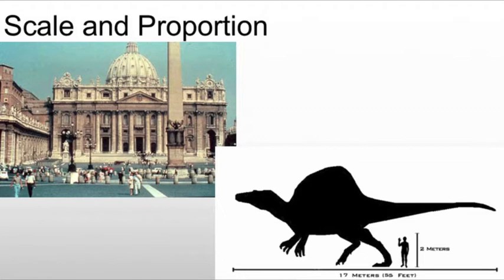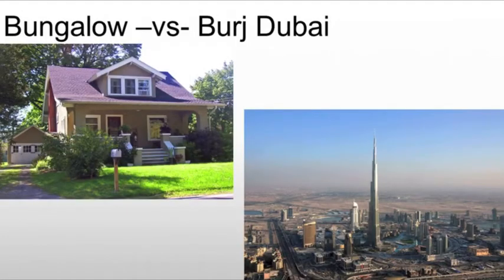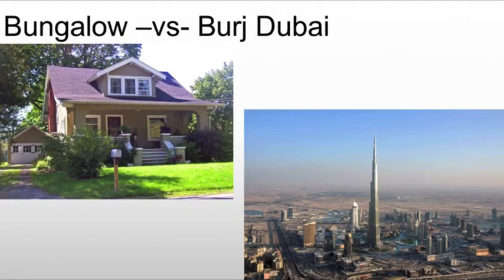This could have a lot of impact. For example, take a bungalow home versus the Burj Dubai. The bungalow seems perfect and intimate as a home for a couple of people. Whereas if one or two people lived in the Burj Dubai, it's just too much space — it would become uncomfortable. But then again, you wouldn't want to run a major business out of a bungalow because it just doesn't have the space for it. So we need to take that scale into account.